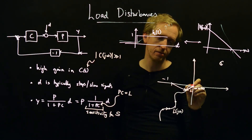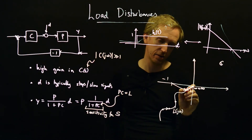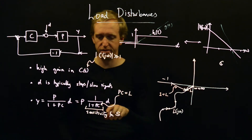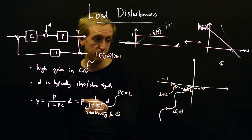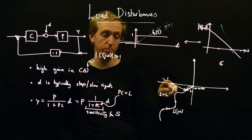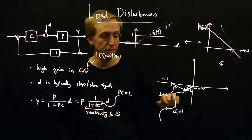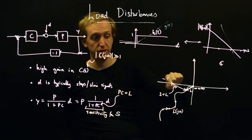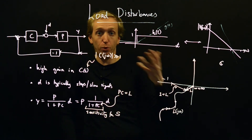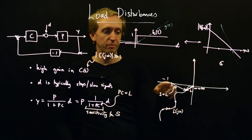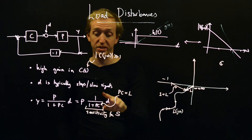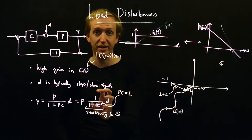On the Nyquist plot, the distance from the origin to a point on the curve is |L(jω)|, and the distance from the minus-one point to that same point is |1 + L|. Since 1+L is precisely the denominator of the sensitivity function, the distance of points on your Nyquist plot to the minus-one point gives you 1 over the sensitivity. If we get very close to the minus-one point, the sensitivity function gets very large. So the distance to minus-one governs the size of the sensitivity function and tells you what the effect of your feedback is.